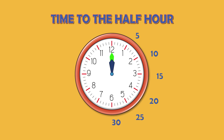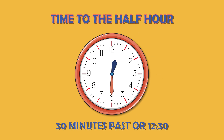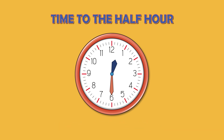The big hand — the minute hand — because these are the minutes, is always going to be on the 6, or 30 minutes. So that's why we sometimes say 30 minutes past, or 12:30. This shows 12:30 because it's halfway between 12 and 1 o'clock.